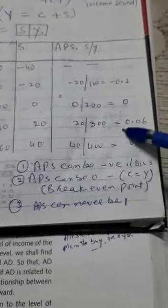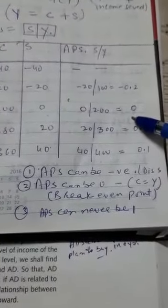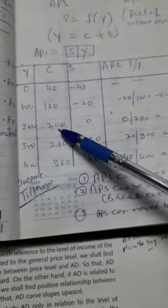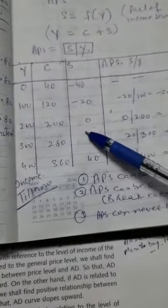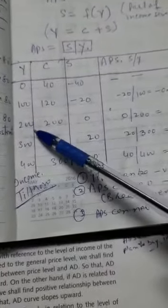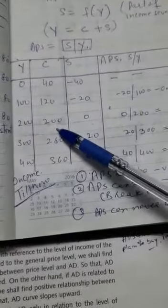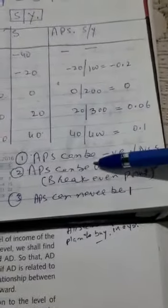Clear? Second is, APS can be 0 also. See here. When it can be 0? When your income is equal to consumption. That means, you have saved nothing. Whatever is your income, that is your consumption. So, in this case, this can be 0.